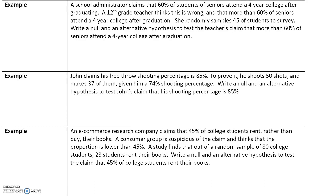Let's write some null and alternate hypotheses. A school administrator claims that 60% of seniors attend a four-year college after graduating. That's the null hypothesis — the currently accepted fact. Since 60% is a proportion, we write H₀: p = 0.60. A 12th grade teacher thinks this is wrong and that more than 60% of seniors attend a four-year college after graduation. She randomly samples 45 students. The alternate hypothesis — what the teacher is claiming — is that p is greater than 0.60.